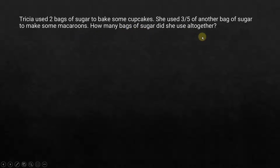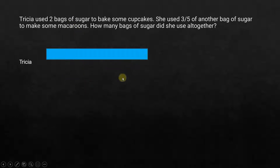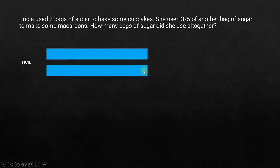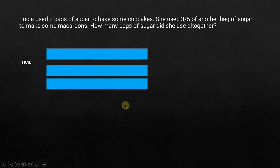This is a very basic fraction-related question. Let's assume Trisha had two full bags of sugar, and from a third bag she only used 3/5 of it. So we divide that third bag into five equal parts and take only three of them.